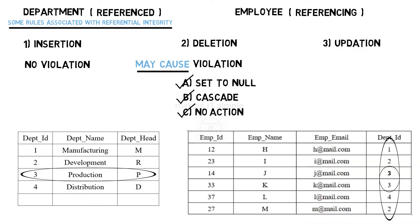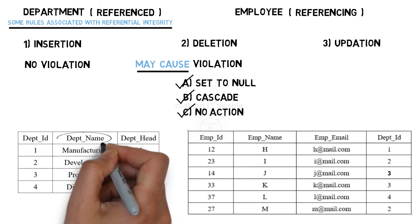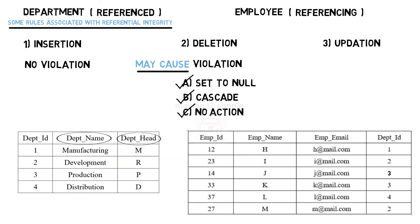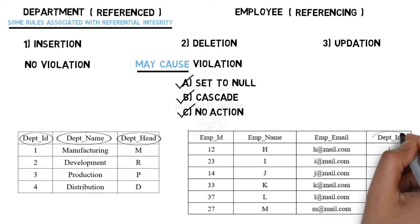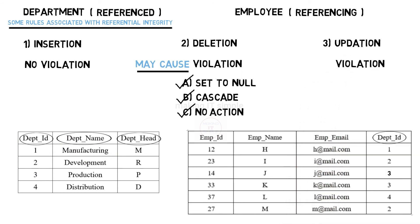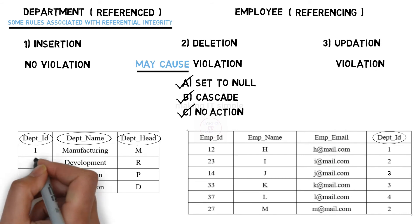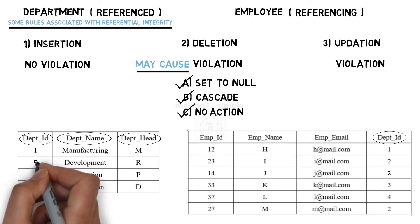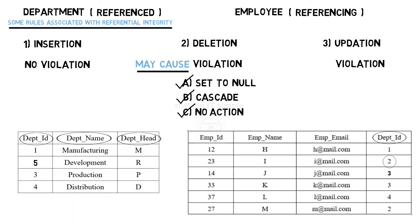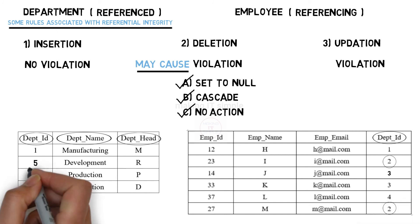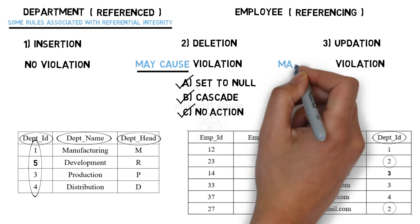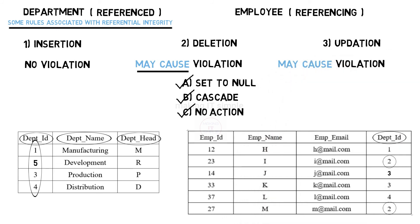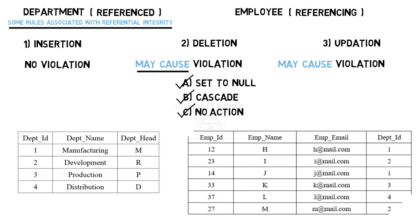The third operation is updation. What if we update a record from the reference table? If we update the department name or department head, there will not be any violation of referential integrity because these columns are not referenced. But if we update department ID, which is referenced in the employee table as a foreign key, then there will be a violation. For example, if we update the department ID of the development department and change it to 5, now in the employee table those employees are working for department ID 2, but in the department table there is no longer a department with ID 2. This is violating referential integrity — therefore, update also may cause violation.